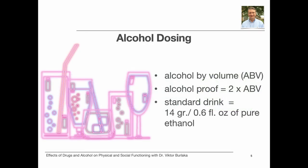Alcohol dosing. Alcohol by volume is a universal measure of alcohol concentration in beverages. It refers to milliliters of pure ethanol in 100 milliliters of the beverage at 68 degrees Fahrenheit, converted to a percentage. For example, 40% is a typical alcohol by volume value for tequila, vodka, and rum.